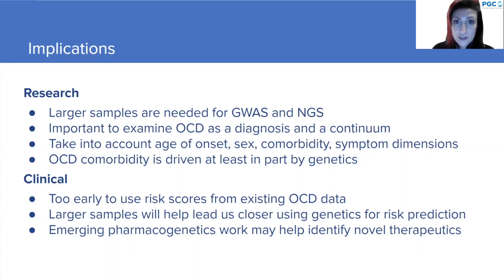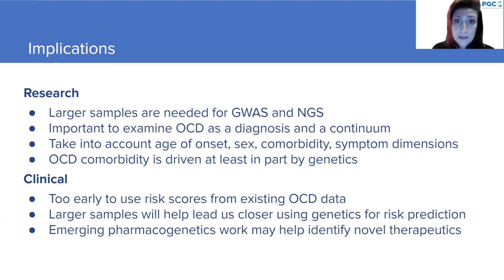In terms of clinical implications, it's still early days. There is hope that genetic information will be helpful as part of a diagnostic assessment at some point, though the extent is still unclear and it's too early given current results. Larger samples will be required. Emerging pharmacogenetics work may help identify novel therapeutics or predict treatment success, and evidence from glutamate research has prompted investigation of glutamate-based therapeutics for OCD.